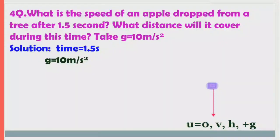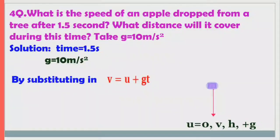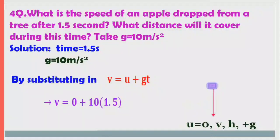Using v = u + gt with u = 0: v = 0 + 10 × 1.5 = 15 m/s. The velocity of the apple after 1.5 seconds is 15 m/s.